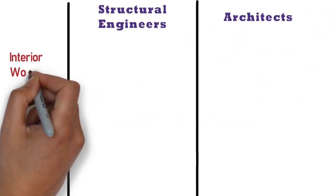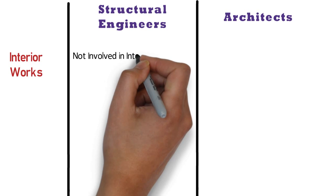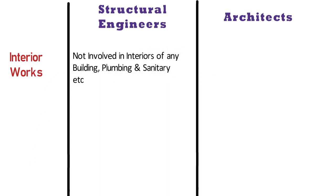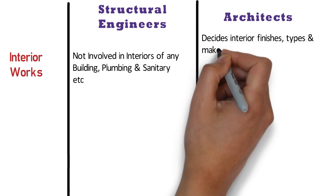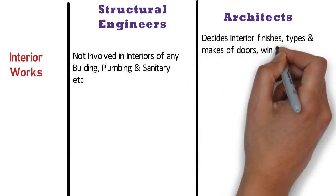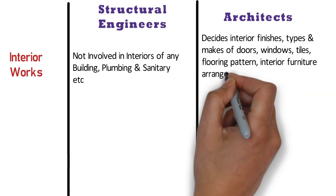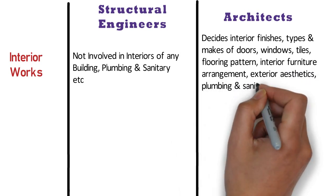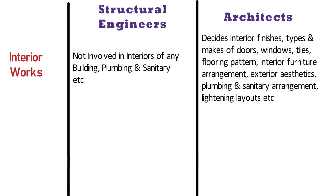Interior Works: The structural engineer is not involved in interiors of any building, plumbing and sanitary. Whereas the architect is the one who decides interior finishes, types and makes of doors, windows, tiles, flooring pattern, interior furniture arrangement, exterior aesthetics, plumbing and sanitary arrangement, and lighting layouts.